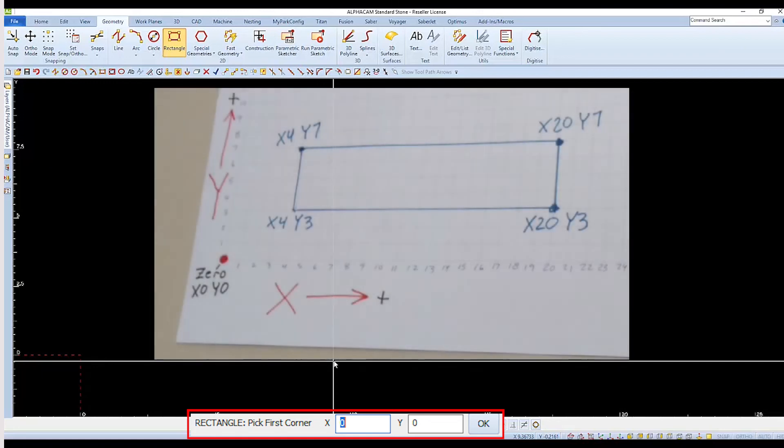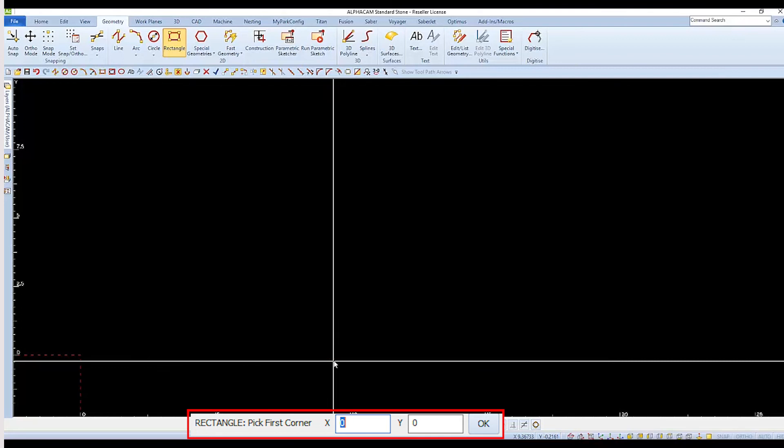The coordinates for the first corner are x4, y3. So I'll type 4 and press the Enter key for the x value, and then I'll type 3 and press Enter for the y.